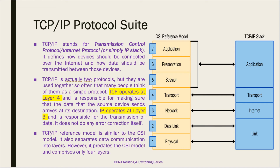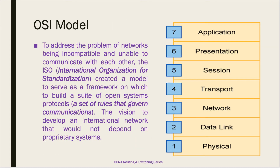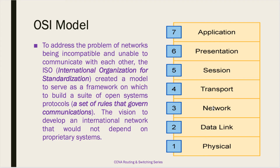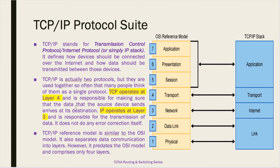TCP operates at layer 4, which is the transport layer, while IP operates at layer 3, which is the network layer. Layer 4 is responsible for making sure the data that the source device sent arrives at its destination, while IP is responsible for the transmission of data — there's no error correction at that layer; error correction happens at the data link layer. The TCP/IP reference model is similar to the OSI model, but there is a difference: OSI has seven layers while TCP/IP has only four layers.